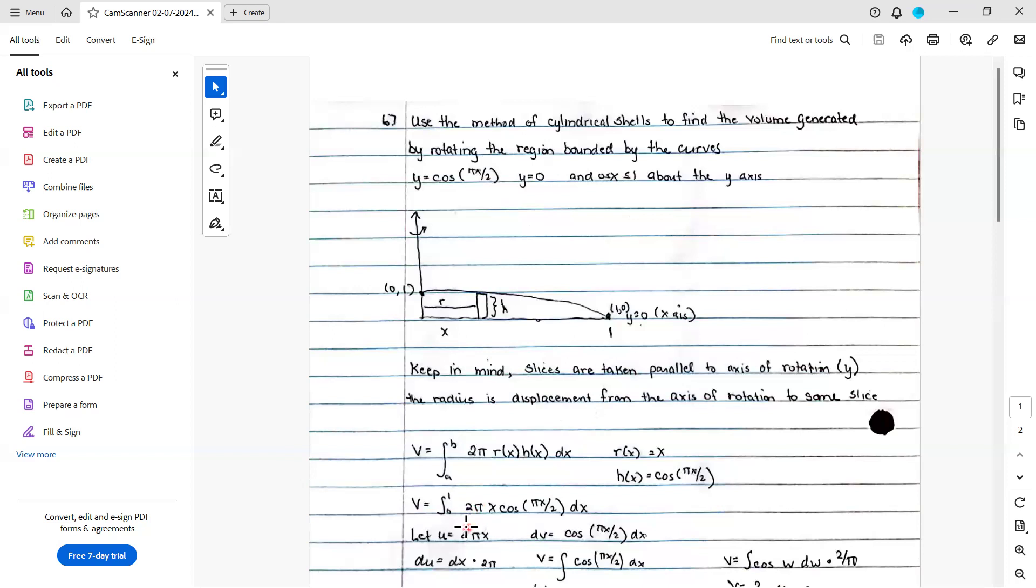We're going to let u be 2 pi x. Yes, I could have pulled out the 2 pi before I integrated. du then is 2 pi dx. dv is the rest of my integrand, cosine pi x over 2 dx. And v is the integral of that.